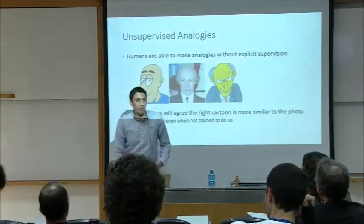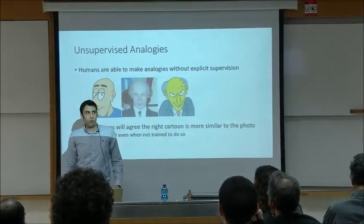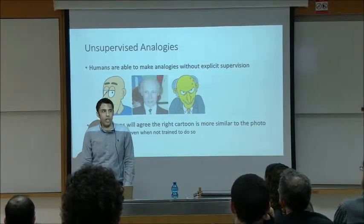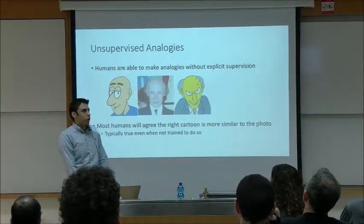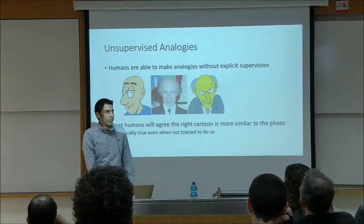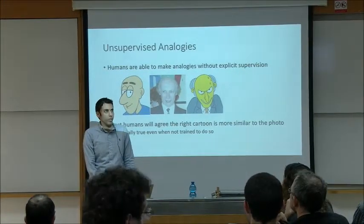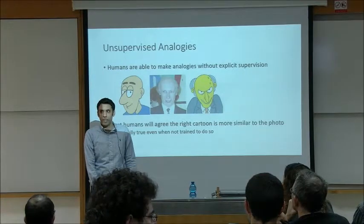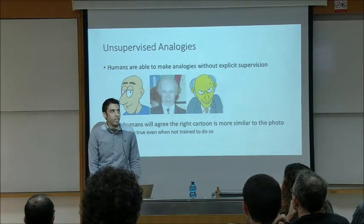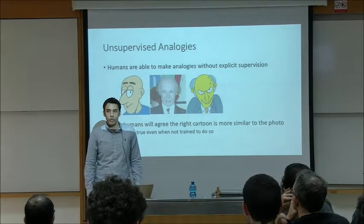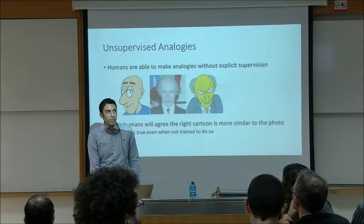Today I'm going to speak about unsupervised analogies. Humans are really good at making analogies, even without any supervision. For example, if we take a look at these three images, most of us would agree that the image in the middle is more analogous to the one on the right than to the one on the left. We weren't specifically trained to do it — we didn't receive specific supervision, but we can still make these analogies.